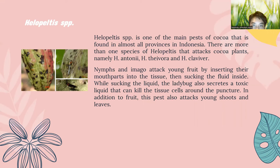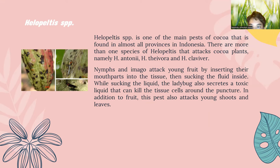The main pests in cocoa. The first is Helopeltis SPP., one of the main pests of cocoa found in almost all provinces in Indonesia. There are more than one species of Helopeltis that attack cocoa plants, namely H. antonii, H. theivora, and H. clavifer. This pest attacks the fruit by inserting its mouthparts into the tissue and sucking the fluid inside. The ladybug also secretes toxic liquid that can kill the tissue cells around the puncture. In addition to fruit, this pest also attacks young shoots.